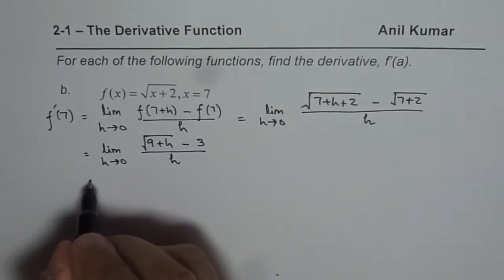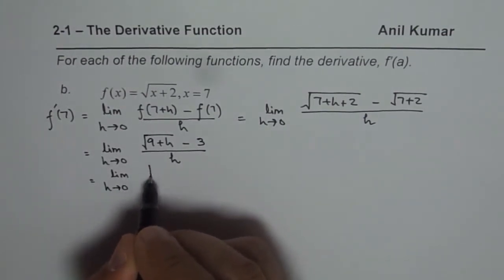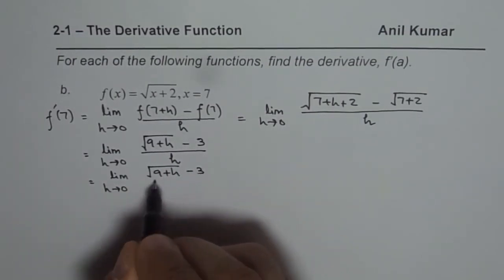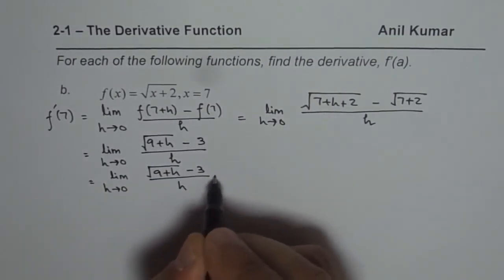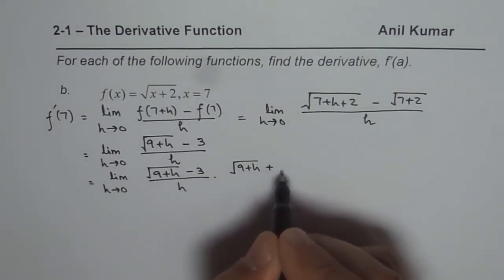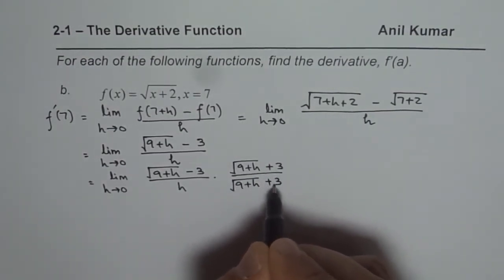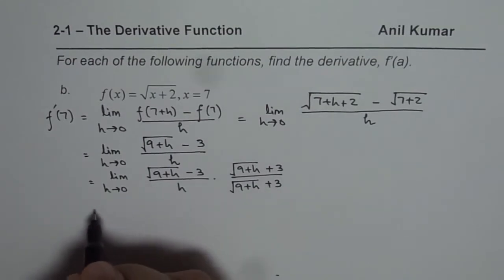Now to solve this, I need to rationalize it. So limit h approaches 0. So we have square root of 9 plus h minus 3 over h times square root of 9 plus h plus 3 divided by square root of 9 plus h plus 3.